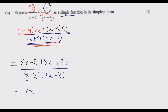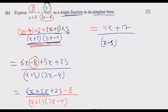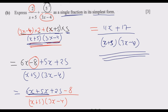Collecting like terms: 6x plus 5x gives 11x, and 25 minus 8 gives positive 17. So the result is (11x plus 17) over (x plus 5)(3x minus 4). Since no number divides both 11 and 17 simultaneously, this is already in simplest form. That is how you answer question 8 to get the 12 marks.